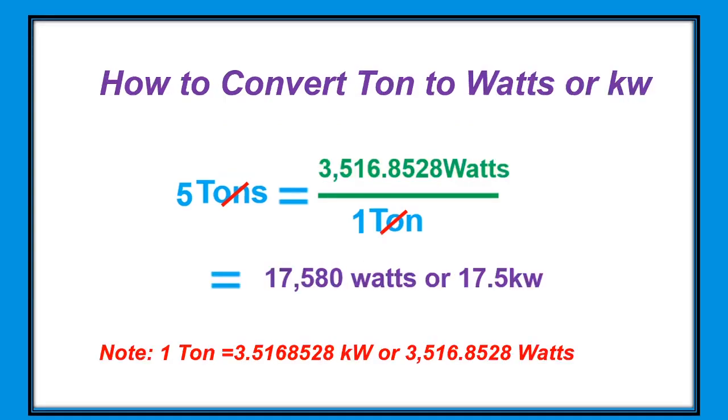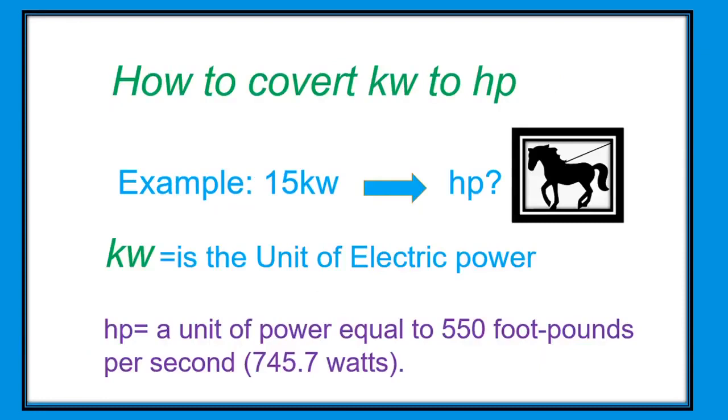Next, how to convert ton to watts. Our example here is 5 tons. Note: 1 ton equals 3.516 kilowatts or 3,516 watts. 5 tons times 3,516 watts over 1 ton. We're going to cancel the tons, so the answer is 17,580 watts or 17.5 kilowatts.